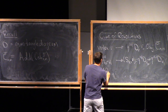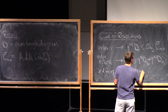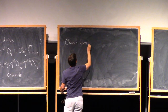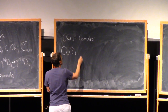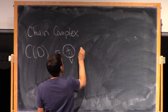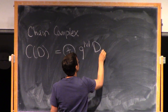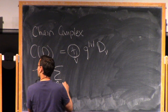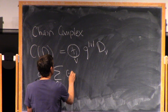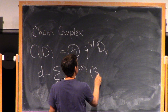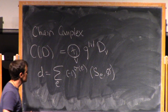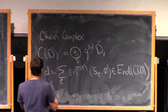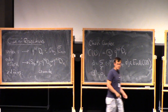And then two-dimensional faces commute. So now we can form a chain complex in this category. C of D, at the level of objects, is just the direct sum over all V of Q to the L1-norm of V, d(V). And the differential D is given by taking the sum over all edges E of minus one to the sigma of E times this morphism S_E of the empty set. This is an endomorphism of C(D), and because two-dimensional faces commute, d-squared is zero. So it's a totally formal construction.